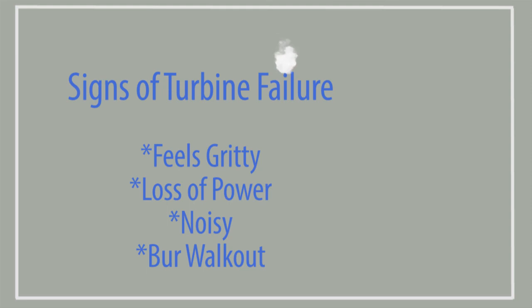One of the ways you can tell when the turbine has started to fail is if you spin the turbine with your fingers - the bearings inside, if they've failed, will be real gritty and sandy and like they're catching. That should spin nice and smooth. Other signs include loss of cutting power, the handpiece getting louder and louder, or the burr starting to slide out or walk out during use.